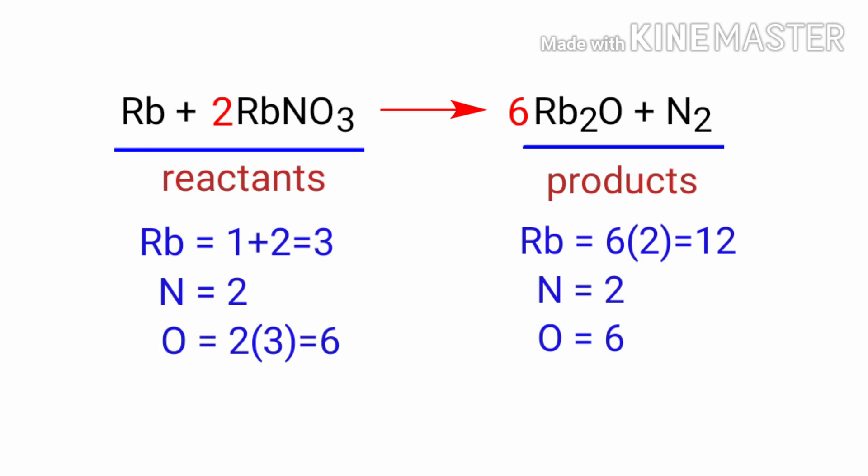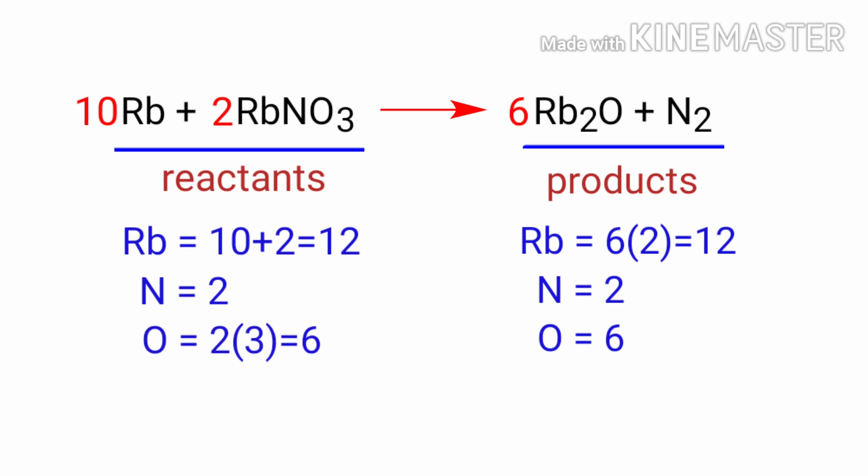Now we need to balance the rubidium atoms. To do this, we need to put a coefficient of 10 in front of Rb. The equation is now balanced.